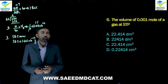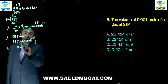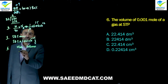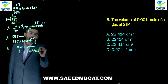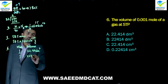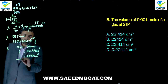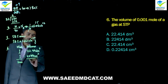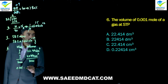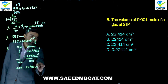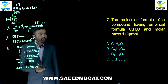Question 6: Volume of 0.001 mole of gas at STP. We know 1 mole of gas at STP occupies 22.414 dm³ or 22,414 cm³. Dividing both sides by 1000, 0.001 mole occupies 22.414 cm³. This matches charlie option: 22.414 cm³.